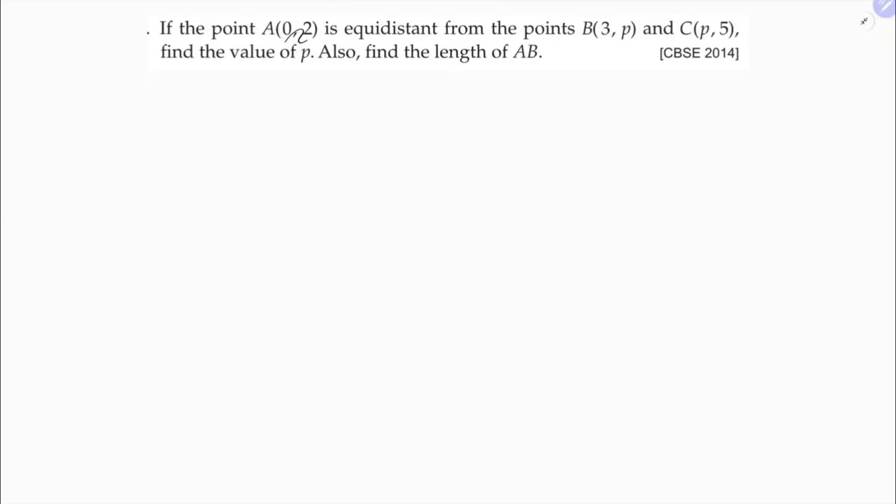If the point A is equidistant from B and C, then the distance between A and B is equal to the distance between A and C. So this point A is at equal distance from B and C.